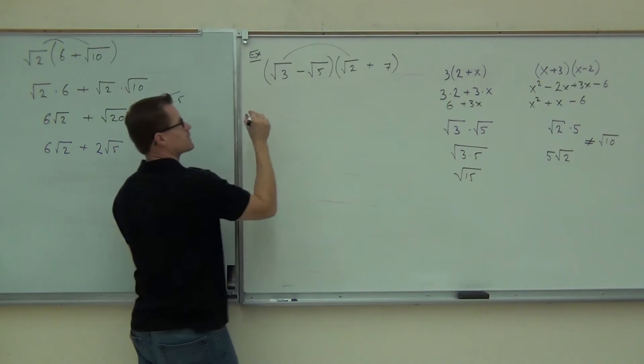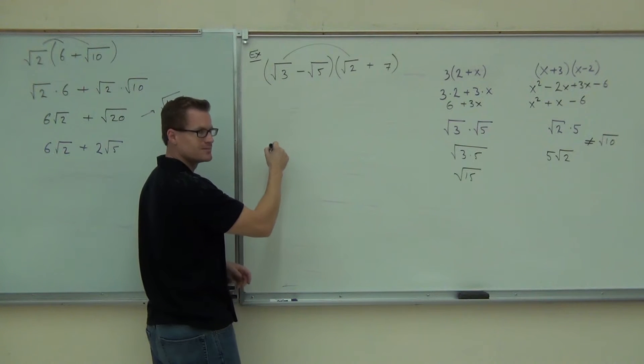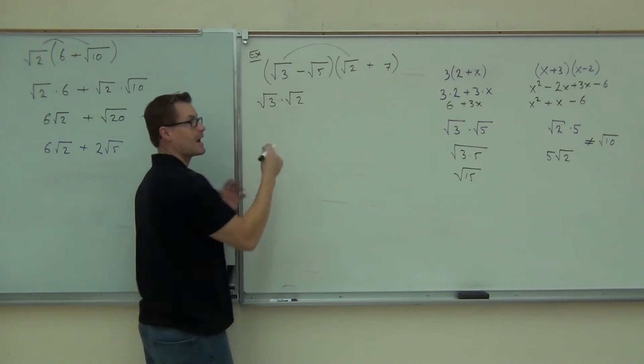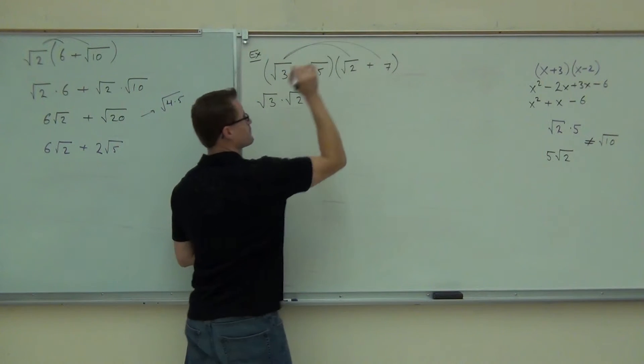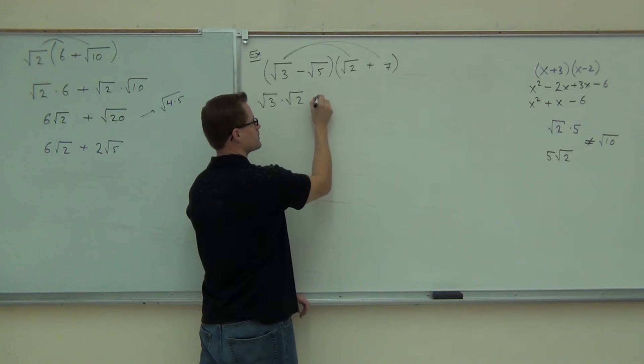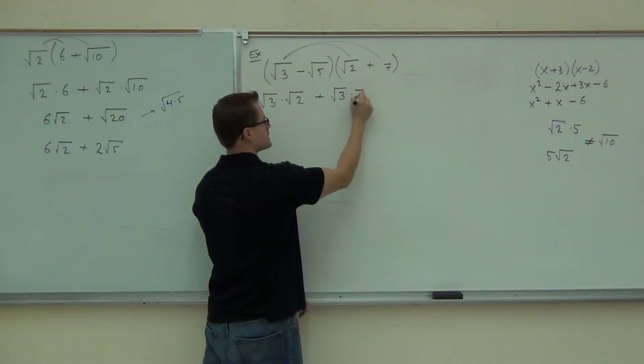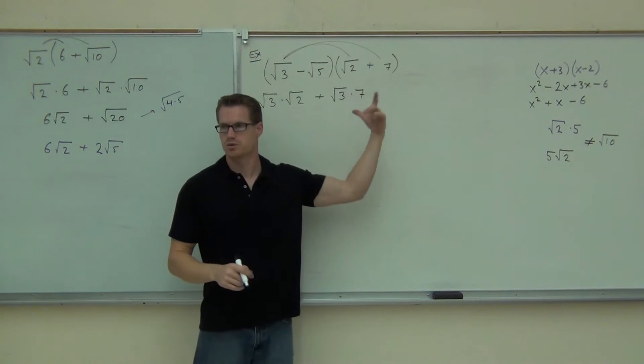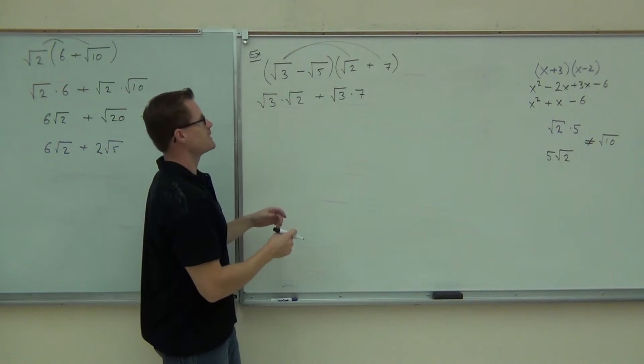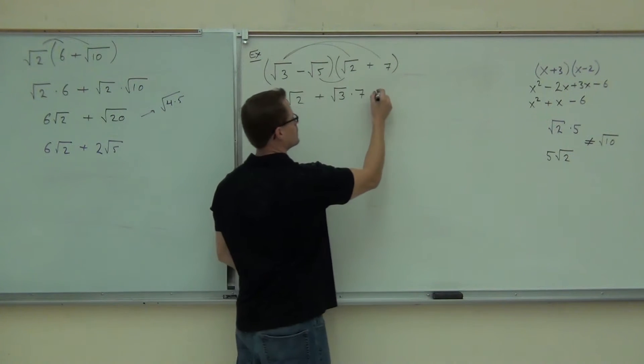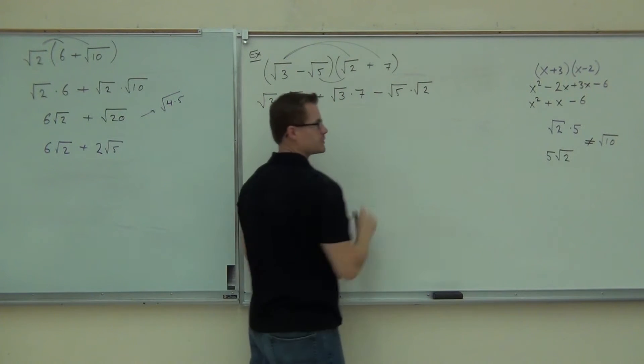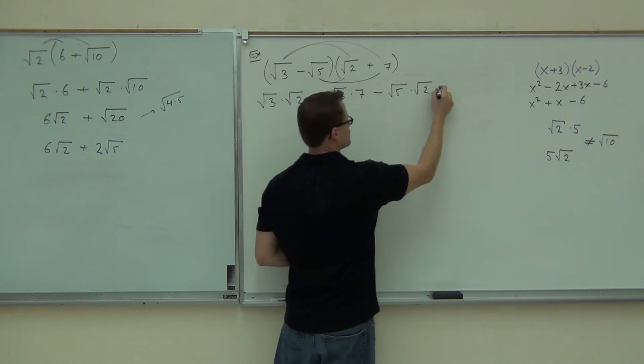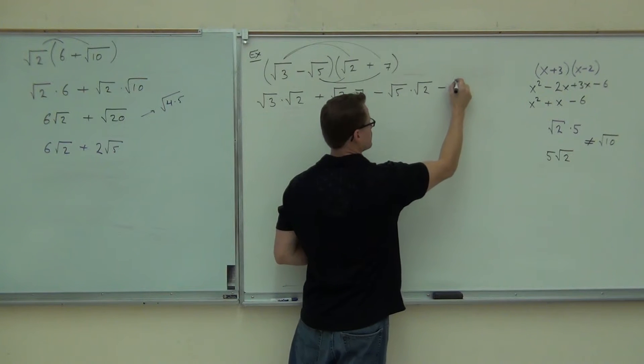Write it out and make sure it looks like this, because that way you're going to clue yourself into, oh, here I can combine them. Here I can't. When I distribute, let's do this together, I'm going to get the square root of what? I said don't do it in your head. √3 times square root. Good, write that out. The next thing I'm going to do is multiply the √3 times the 7. Am I going to get a plus or a minus? √3 times 7.